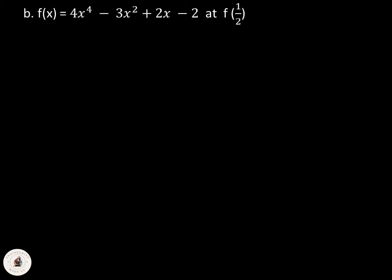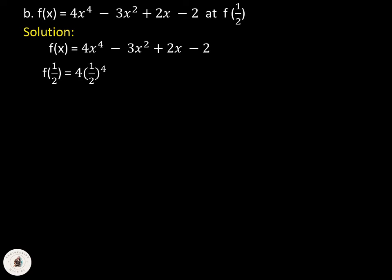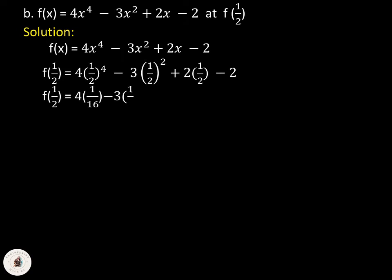For letter B, we have f(x) = 4x⁴ - 3x² + 2x - 2, and we need to find f(1/2). To solve this, we substitute 1/2 for x: f(1/2) = 4(1/2)⁴ - 3(1/2)² + 2(1/2) - 2. Performing the operations, we have f(1/2) = 4/16 - 3/4 + 1 - 2.